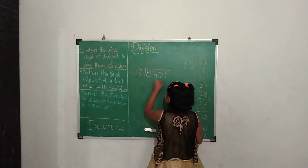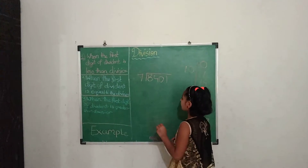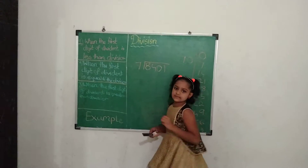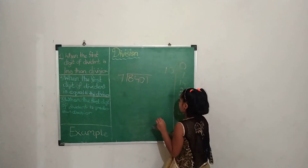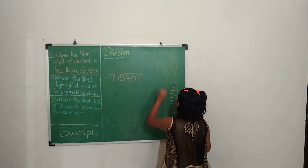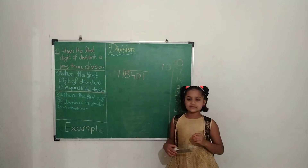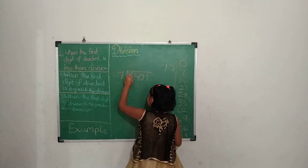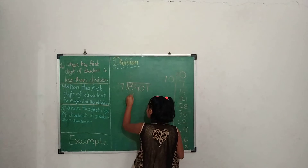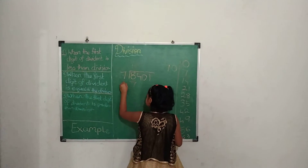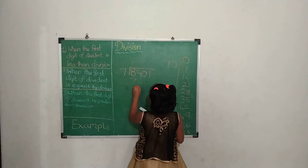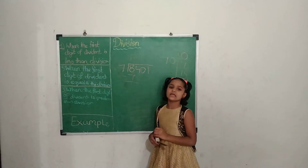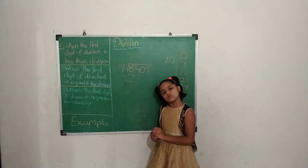Now, to divide this number: 8 is bigger than 7, so we take 7 ones are 7. Then 1 will be written in the quotient and 7 will be written below. We subtract: 7 minus 7 equals 0... wait, 8 minus 7 equals 1.